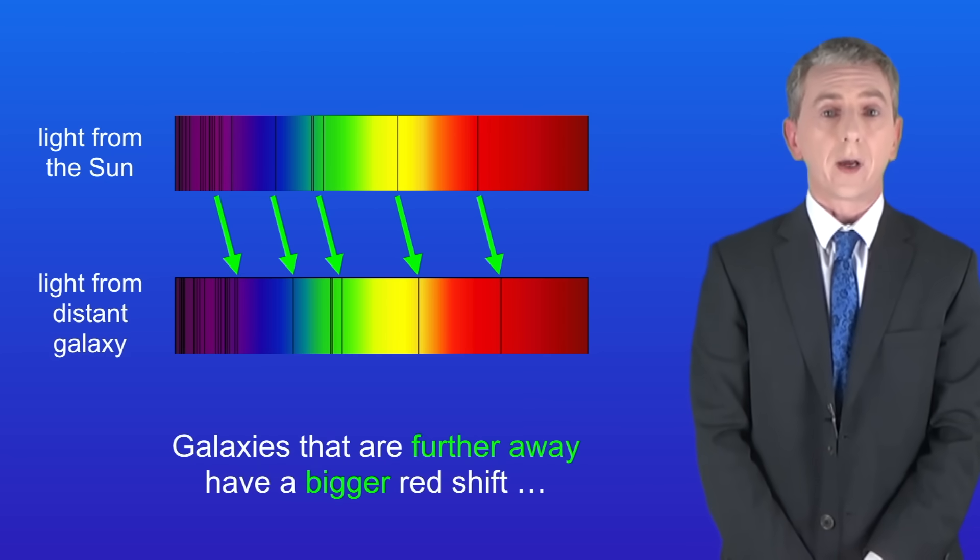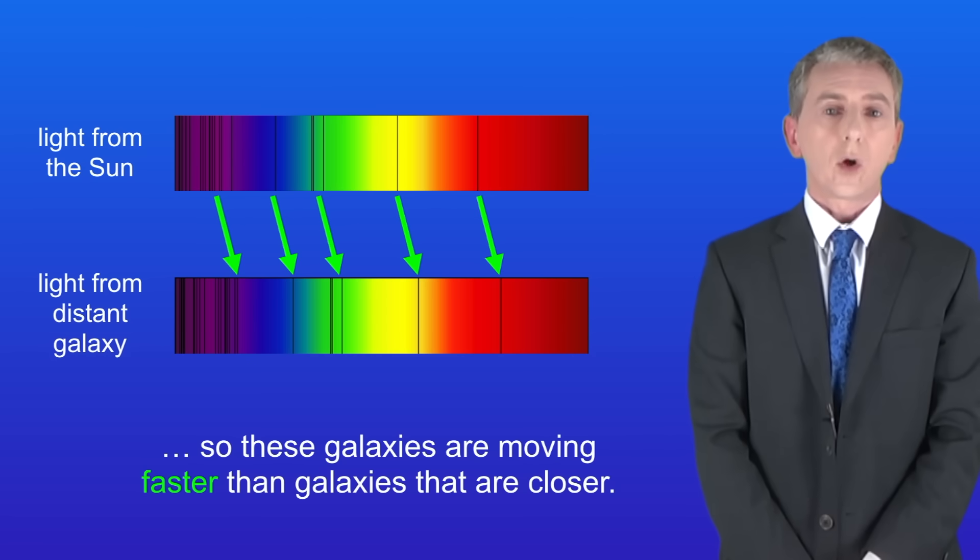Galaxies that are further away have a bigger redshift. So these galaxies are moving faster than galaxies that are closer.